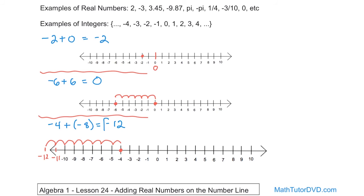Wherever you land at the end is your answer. I'll teach you the rules of addition in algebra for negative and positive numbers so you won't need the number line all the time. But it's important to understand: you start at the first location and move left 8 units — 1, 2, 3, 4, 5, 6, 7, 8 — and that ending position is the result when you add these numbers together.